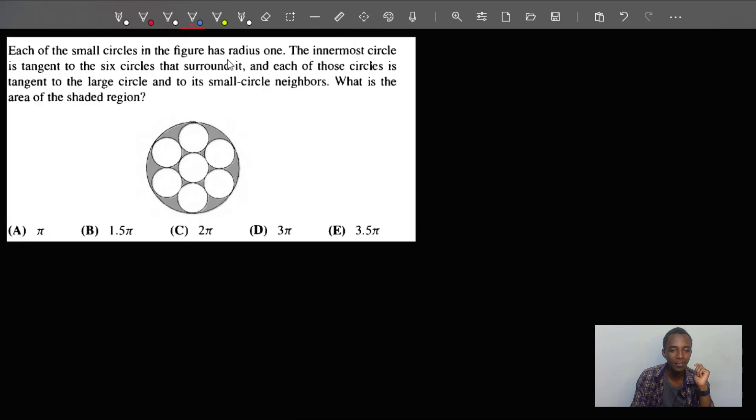each of the small circles in the figure below has a radius of one unit. And then the innermost circle is tangent to six circles. As you can see, this is the innermost circle here and it's tangent to all the other six circles around it. And each of those circles is tangent to the large circle and to its small circle neighbors. Okay, we can see that here.